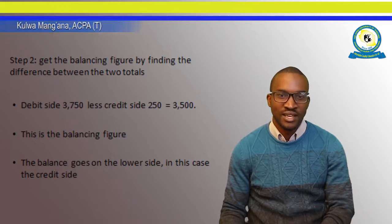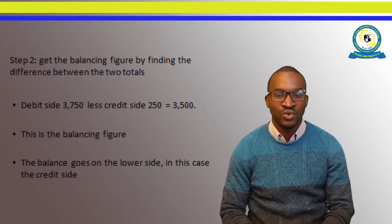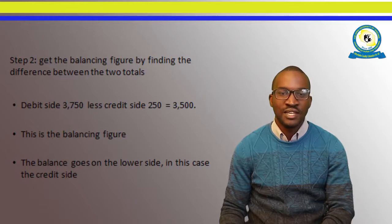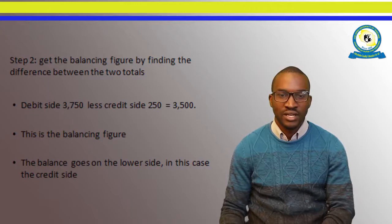The second step is to get the balancing figure by finding the difference between the two totals. Because now we have the total of the debit side and the total of the credit side, you have to find the difference between them. The debit side is $3,750 less the credit side of $250, which gives you $3,500. This is the balancing figure we are referring to.